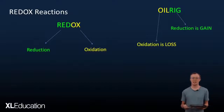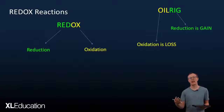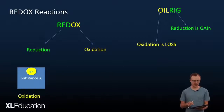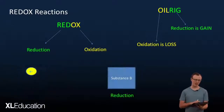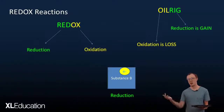Loss of what? Gain of what? Electrons. So redox reactions are where one thing loses electrons and the other thing gains electrons. Oxidation is where a substance has some electrons and it loses them. Reduction is where a substance gains electrons from somewhere else.